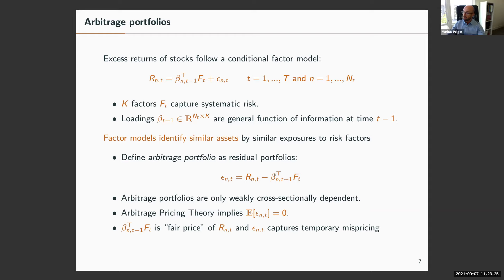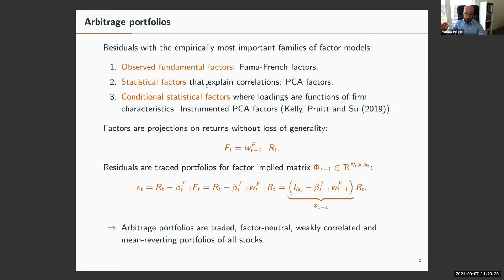The types of factors we use include observed fundamental factors like Fama-French factors, statistical factors estimated with principal component analysis on local windows, and an extension called instrumented PCA where loadings can be functions of firm-specific characteristics such as size, book-to-market ratio, etc. Without loss of generality, we can assume our factors are traded — there are portfolio weights we can use to express our factors as a portfolio of the underlying assets.